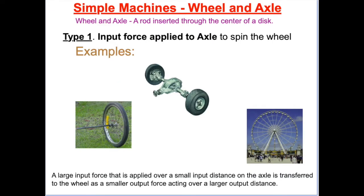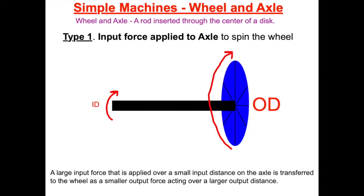That is how bikes and cars work. The axle spins the wheel. When the axle rotates a half a turn, the wheel also rotates half a turn.